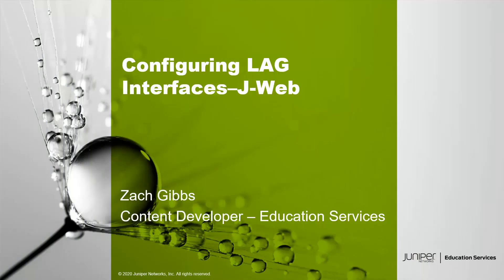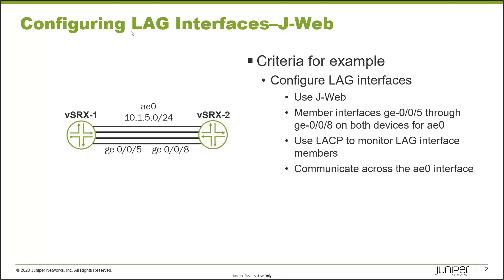Hello, my name is Zach Gibbs and I am a content developer within education services inside Juniper Networks. Today we will be going through configuring LAG interfaces — a JWeb learning byte. In our example topology we have two devices, vSRX1 and vSRX2. Note that these are security devices, but this is the same for configuring LAG with JWeb for any Junos device.